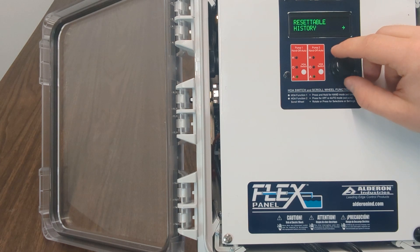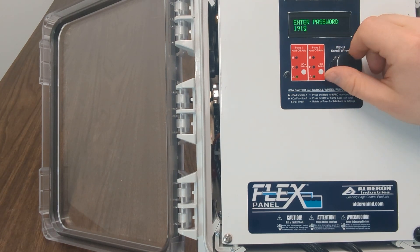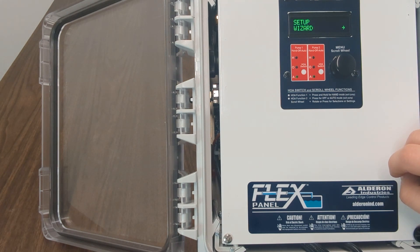Enter the settings menu by rotating one step to the right and clicking again. Next, enter the default password 1919 using the knob. You will see the screen setup wizard. Click here to begin.